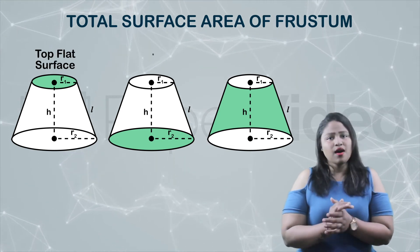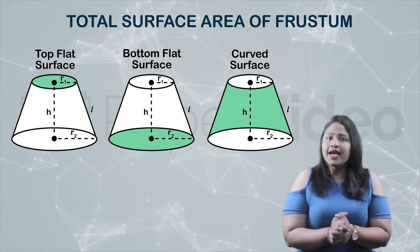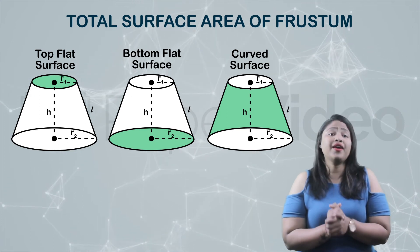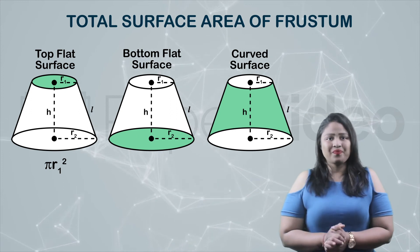top flat surface, bottom flat surface and curved surface. The area of the top flat surface is equal to the area of a circle of radius r1, that is pi r1 squared.